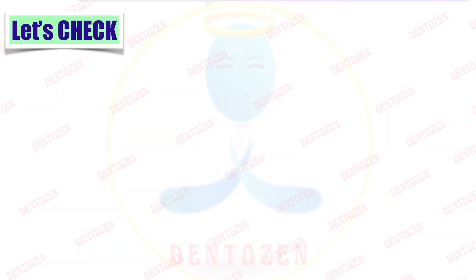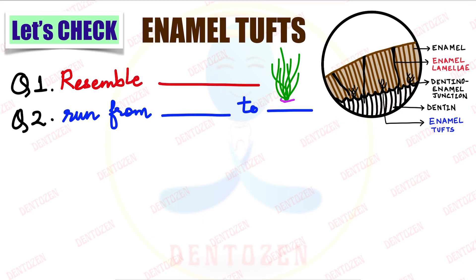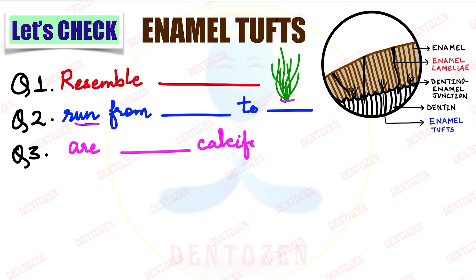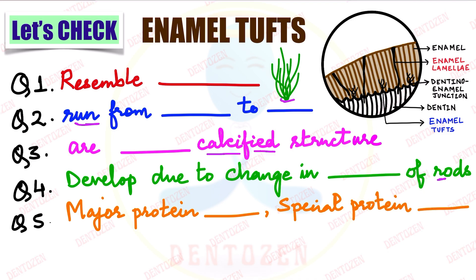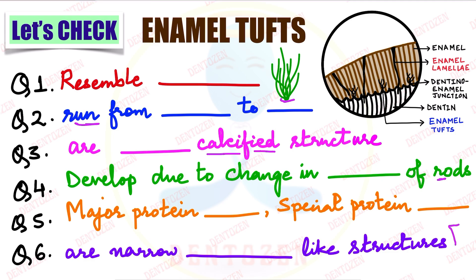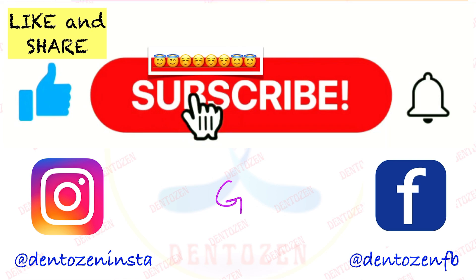Now let's check what you have learned. First: enamel tufts resemble what? Second: they run from where to where — that is their extent. Third: they are what type of calcified structures — hypo or hyper? Fourth: they develop due to a change in what of the rods? Fifth: what is the major protein name and the special protein name? Sixth: they are narrow what-like structures, in a part of which arises from the dentine. That is all for this video. If you liked the video, tap the like button and share it with your friends. Keep watching, keep learning, keep smiling. Good luck for your exam. See you in the next video soon. Take care, bye-bye.